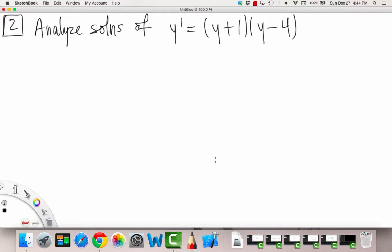Alright, here's number two. We're going to analyze solutions of y prime is equal to y plus 1 times y minus 4. So it's kind of clear to us what the equilibrium points are. That would be y equals negative 1 and y equals positive 4.